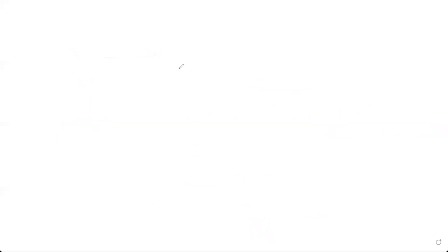Now let's move on to combination. We finished permutation. We know that permutation was when you select and arrange, but combination is when you can select only. You write it as nCr and the formula is n factorial divided by n minus r factorial times r factorial.